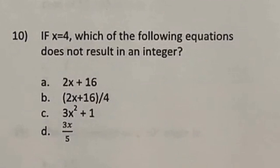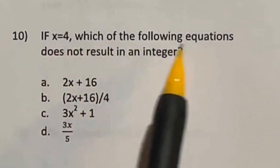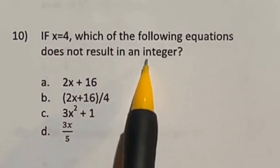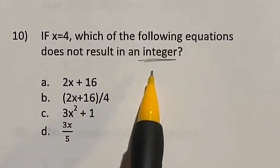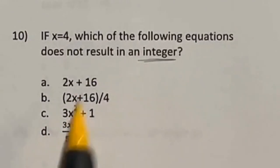So for number 10, it says if we plug four in for X, which of the following equations would not be an integer? By integer, it's talking like a whole number here, positive or negative. In other words, we just have to find something that when we're all finished, it's going to give us a decimal or a fraction, not a whole number.